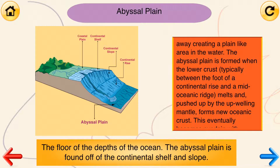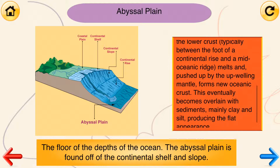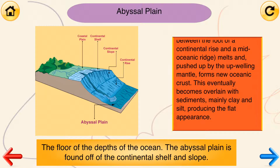The abyssal plain is formed when the lower crust, typically between the foot of a continental rise and a mid-oceanic ridge, melts and is pushed up by the upwelling mantle, forming new oceanic crust. This eventually becomes overlaid with sediments, mainly clay and silt, producing the flat appearance.